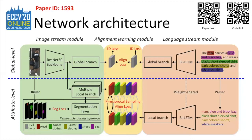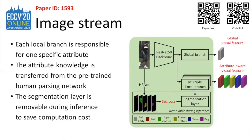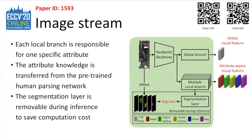We will go into details of these three modules. The image stream is designed to extract full-body and attribute features through a global branch and multiple local branches, respectively, where each local branch is responsible for one specific attribute. To encode attribute information in the visual features, we add a segmentation layer upon local branches and supervise it with predictions from a pre-trained human parsing network. The human parsing network serves as a teacher network that transfers knowledge to each local branch, enabling attribute-aware visual features. Attribute learning also naturally helps resolve ambiguity caused by variance in appearance, varying pose or viewpoints, occlusion, and cluttered background.